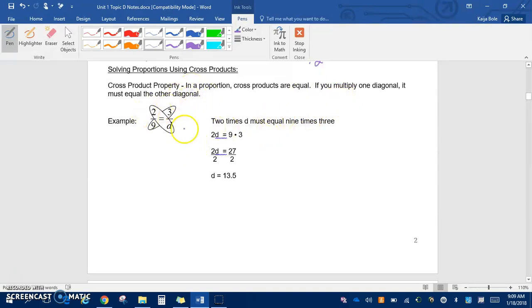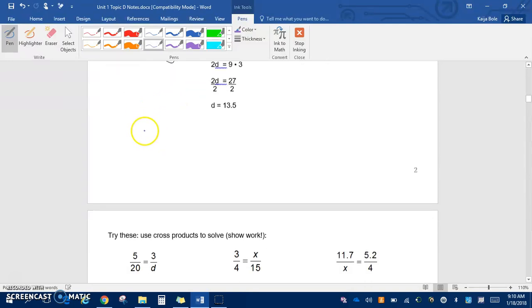If you multiply one diagonal, it must equal the other diagonal. They have it set up here pretty nicely with them circled. They say that 2 times d must equal 9 times 3, so we get 2d equals 27. Then it's just solving a one-step equation. This is why all those times when you're talking about multiplying fractions, we always say multiply across. We don't cross multiply. This is called cross multiplying.